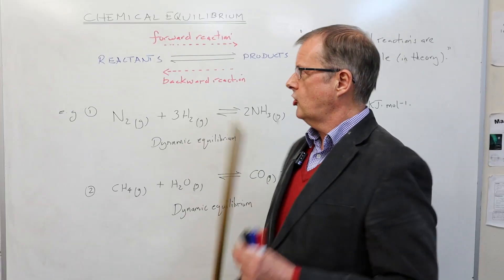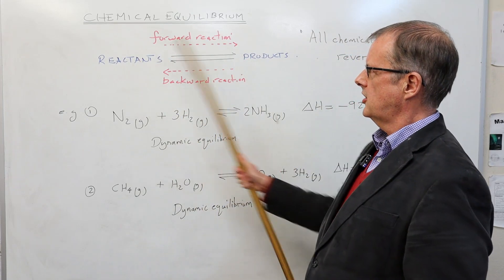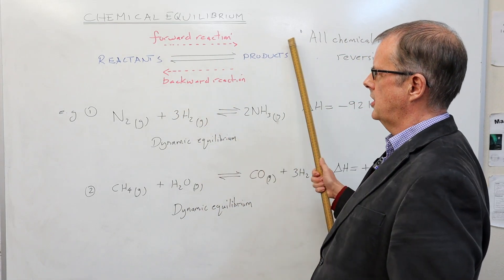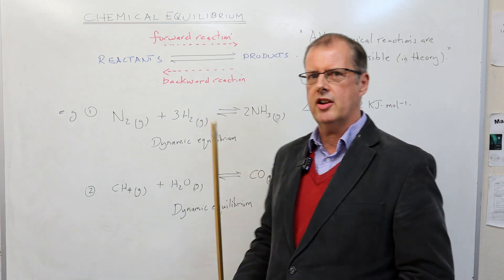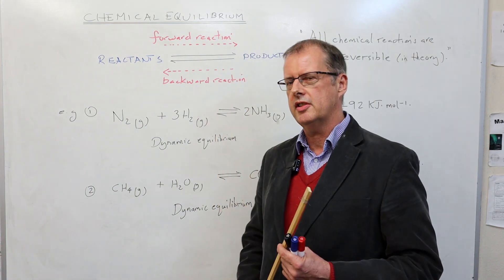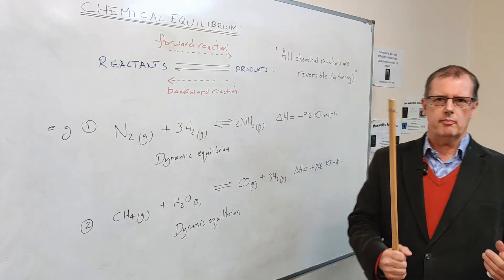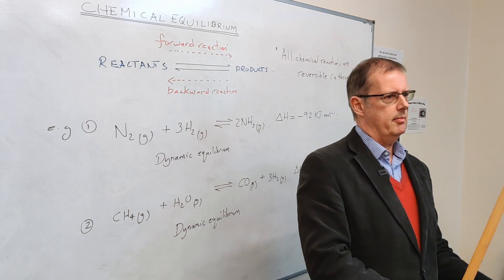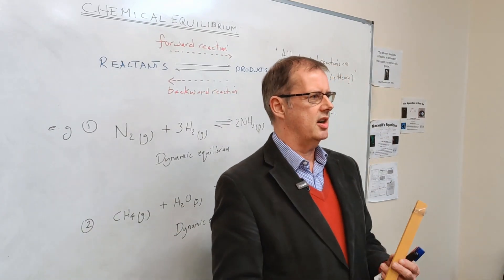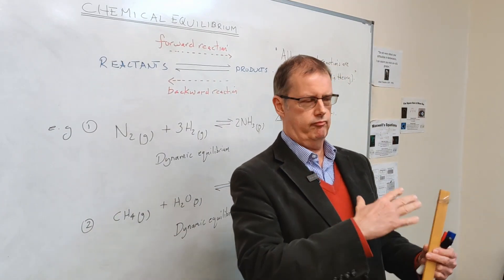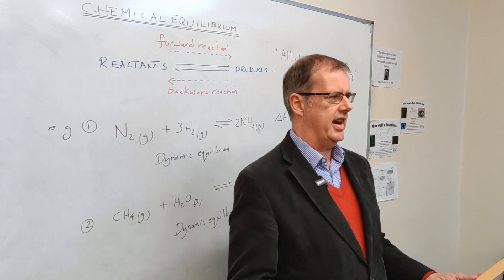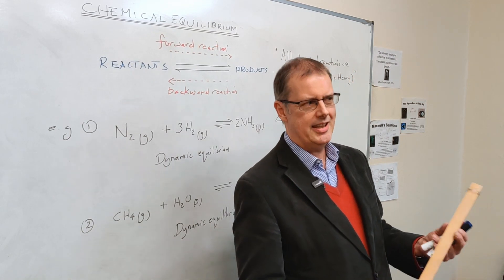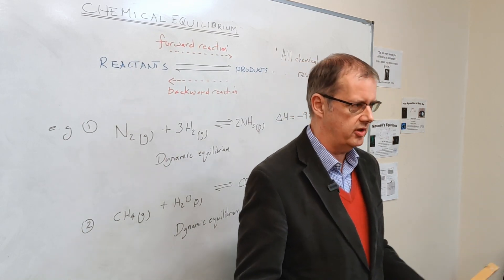Chemical reactions are in theory reversible. Reactants and products — we call going left to right the forward reaction and going right to left the backward reaction. For example, burning a piece of magnesium goes all the way through to magnesium oxide and completes, but if you heated the magnesium oxide it would go backwards.